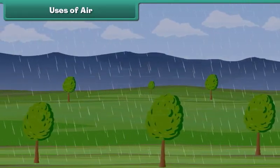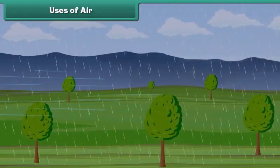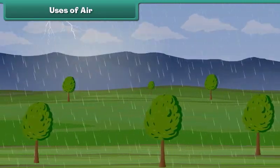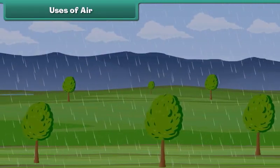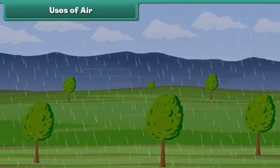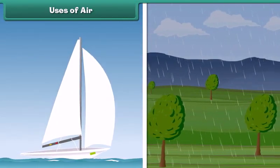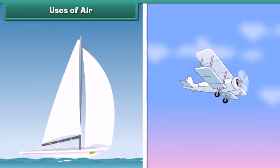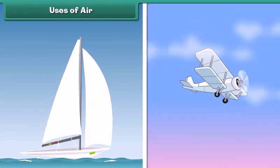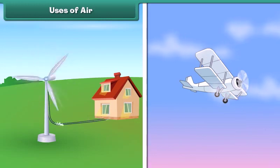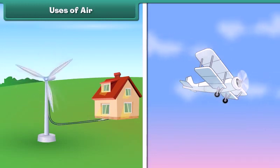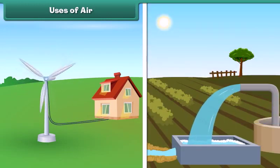Moving air is known as wind. Wind moves clouds and causes rain. Wind helps sailboats and gliders to move. The power of wind is also used to generate electricity, and wind power helps pump water.